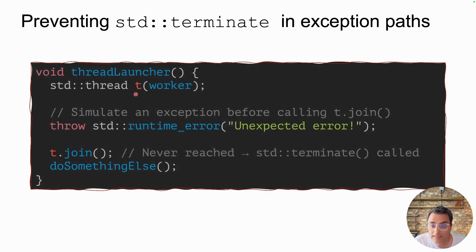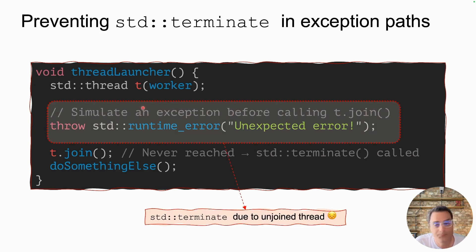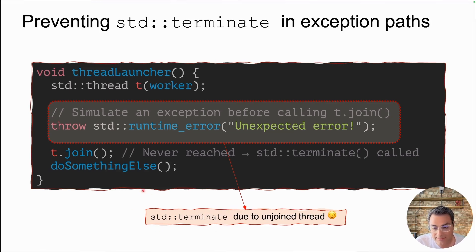You have a launcher thread, you create a new thread with a worker function, and you have every intention to call t.join. However, due to an exception, your launcher thread exits, and even if you catch and handle this exception, because t will be destructed outside of this function, you can never join on it and your program will again be terminated by std::terminate. So if you're using classic std::thread, you have to make sure you put extra effort to handle exceptions and call join, so that std::terminate is not called.